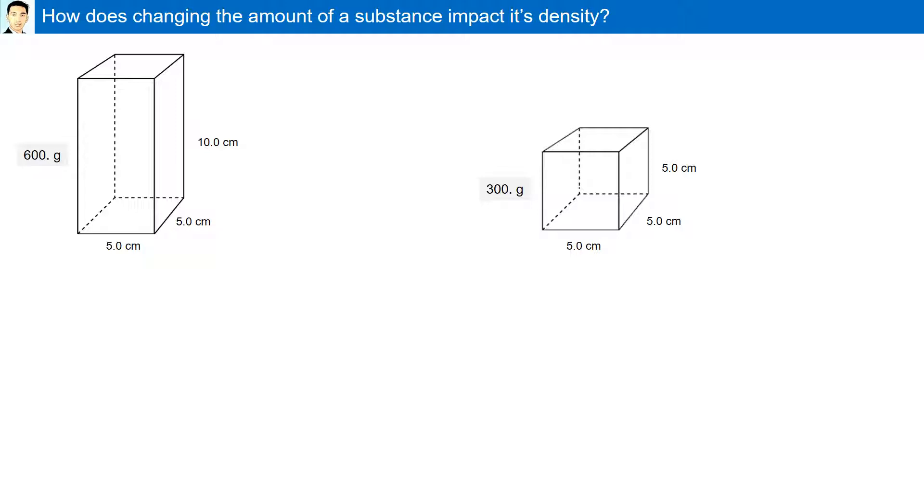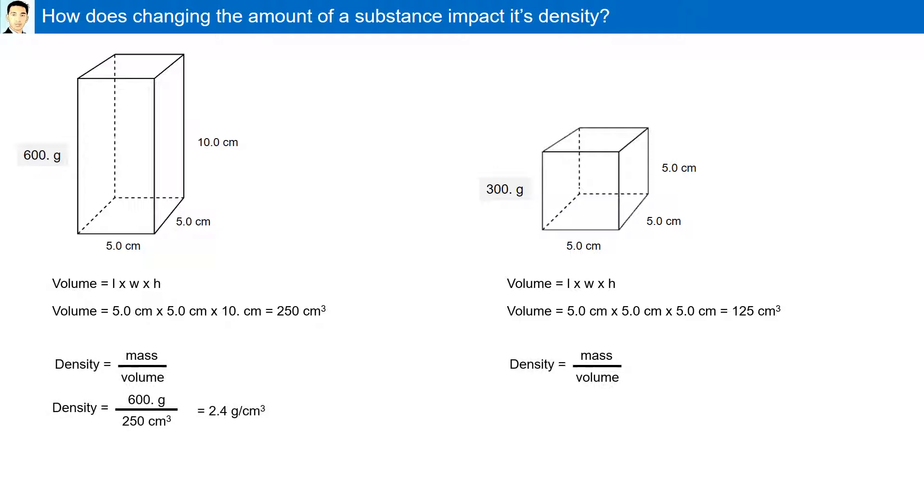How does changing the amount of a substance impact its density? Let's calculate the density of both objects. The first one weighs 600 grams. Its volume is calculated to be 250 centimeter cube. Calculating its density, we have 2.4 grams per centimeter cube. The second object, its volume is 125 centimeters cube, and its density is also 2.4 grams per centimeter cube. The density of a substance does not change from one sample to another. It remains the same.